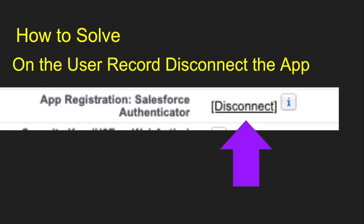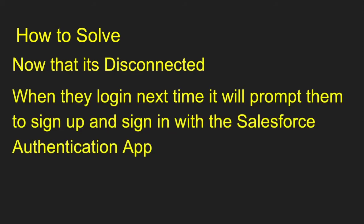It's really easy. Go to the user's record. Next to the app registration, Salesforce Authenticator, click that disconnect button. Once that's done, when they go to login next time, they're going to be prompted to sign up with the Authenticator app. Then they're going to have to go through all the settings and set up just like they normally would. And then once they have all that set up, they can log into Salesforce with the Authenticator app. It's all set up again.